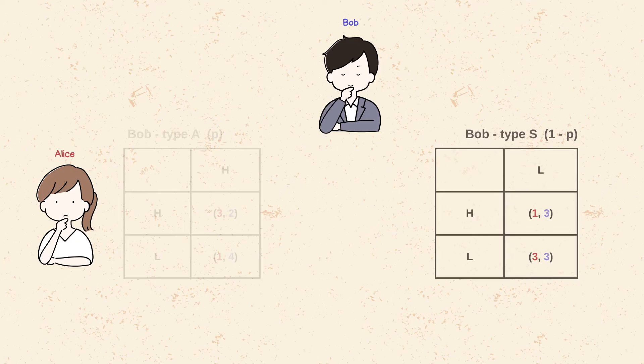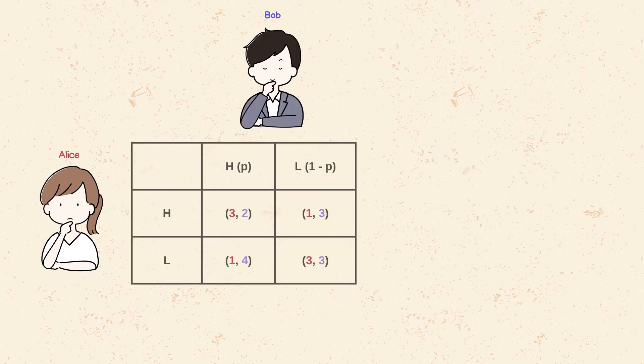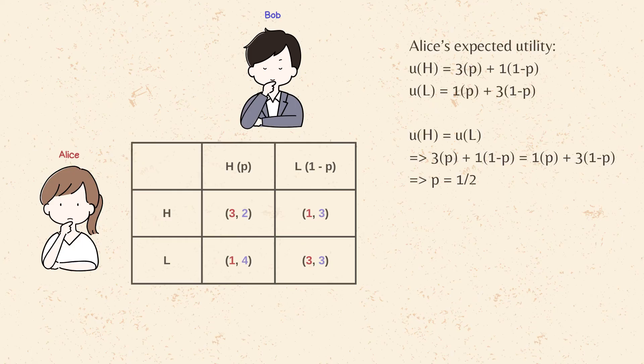And now we get this merged payoff matrix with the probability P that Bob will bid high, and 1 minus P that Bob will bid low. And now we can calculate the expected utility for Alice choosing to bid high or low as follows.